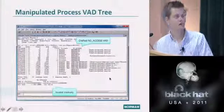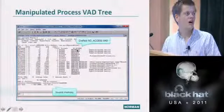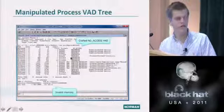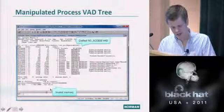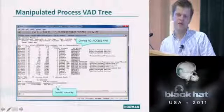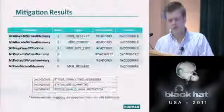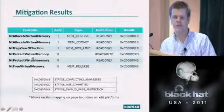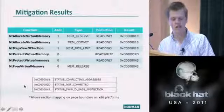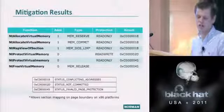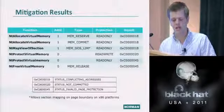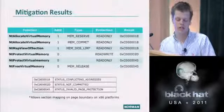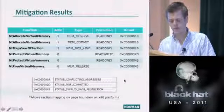We avoid deletion using the same method as the PEB and TEB. We also use a special flag to prevent memory commits — if memory is not committed, protection cannot be changed. We go to the leftmost branch and insert the VAD in the VAD tree. You can see the mapping blocking all null page access attempts. Looking up the PTE for this range shows it's not valid — no page table entries have been created.